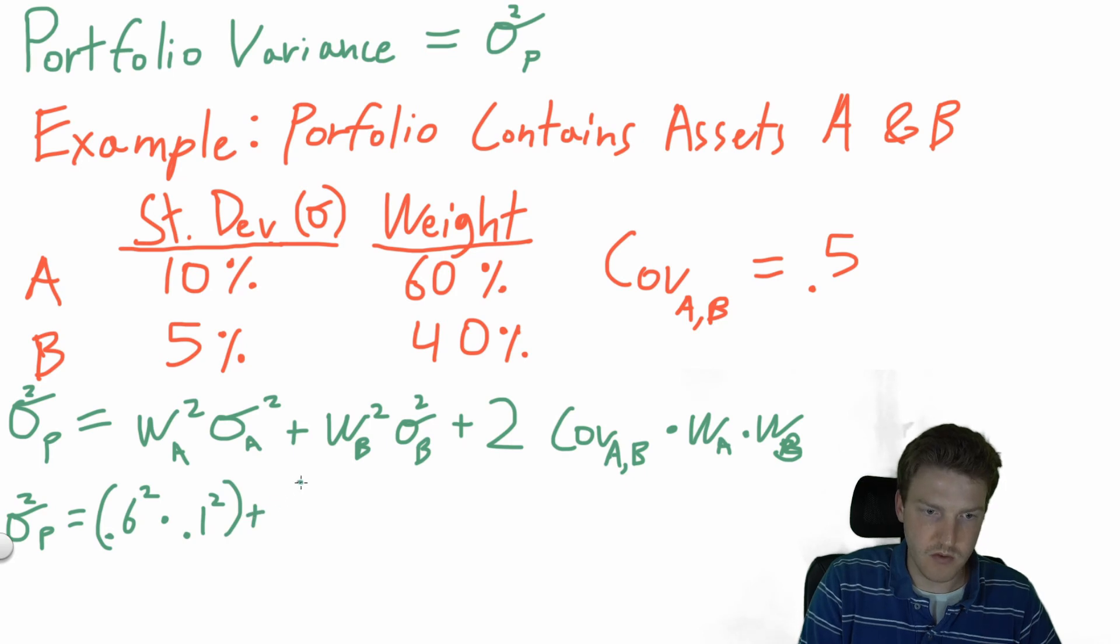Then we're going to do the same thing for B, which is just 0.4 squared times 0.05 squared, plus two times the covariance, which is 0.5, multiplied by the weights, so 0.6 and 0.4.